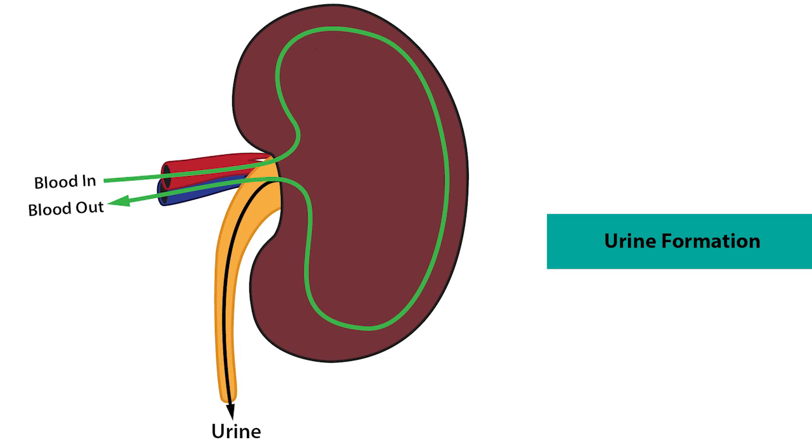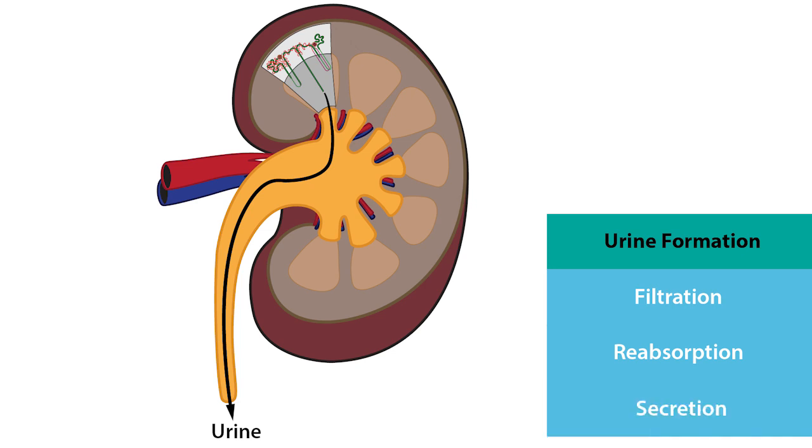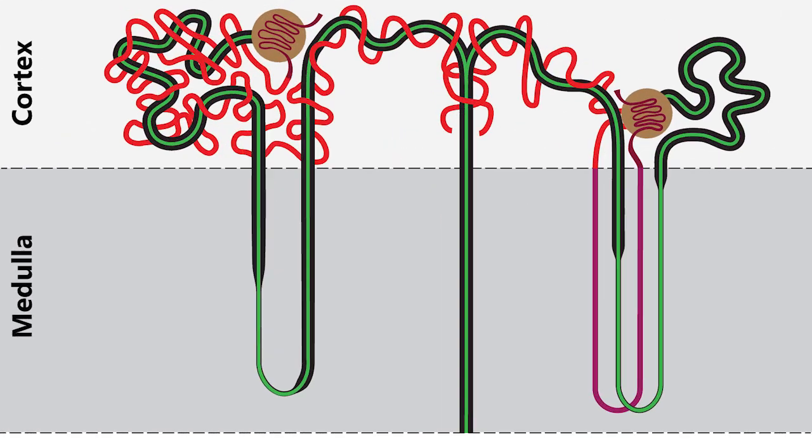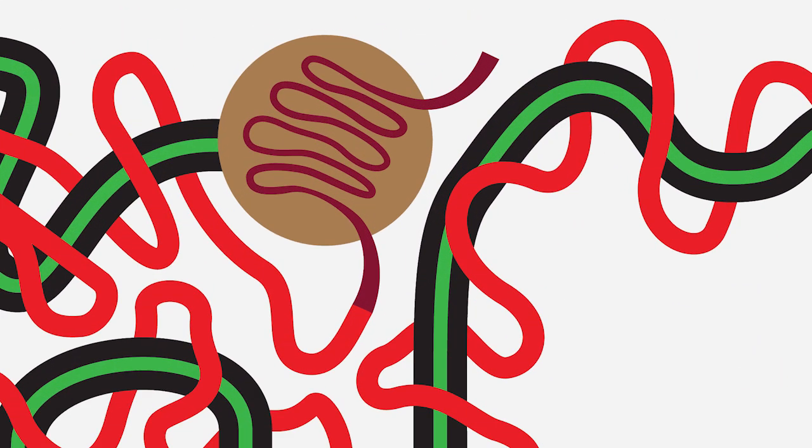So what factors determine the composition of urine? Well, the formation of urine involves filtration, reabsorption, secretion, and these processes occur exclusively in the nephron. Let's use this simplified view of the nephron to explain these processes.